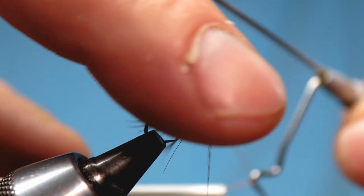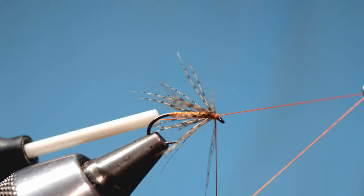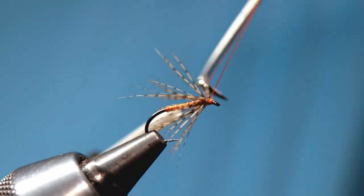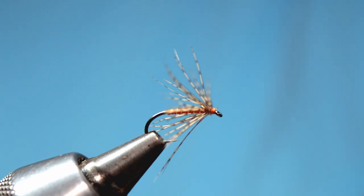Now with your whip finish tool just simply take two or three nice turns of silk before binding it down. Give the silk a pull and there we are.